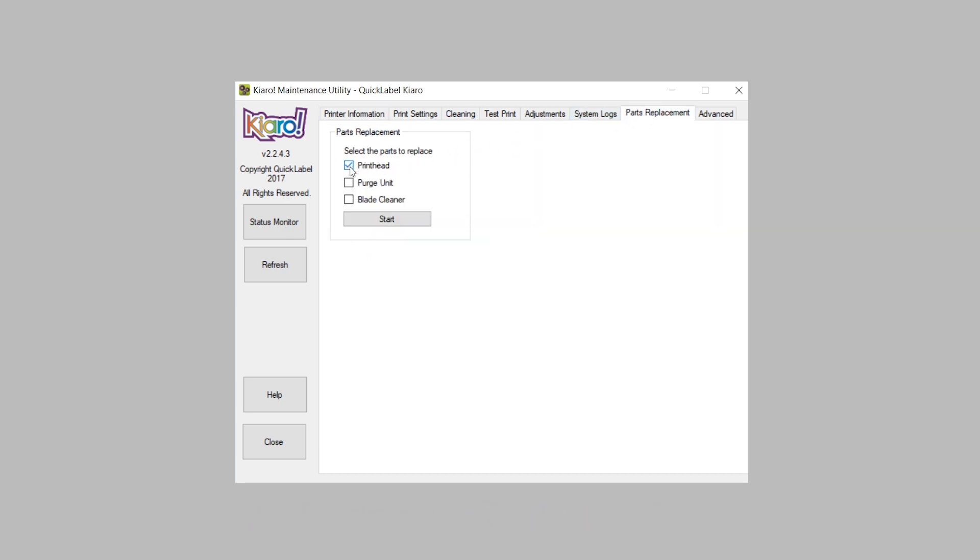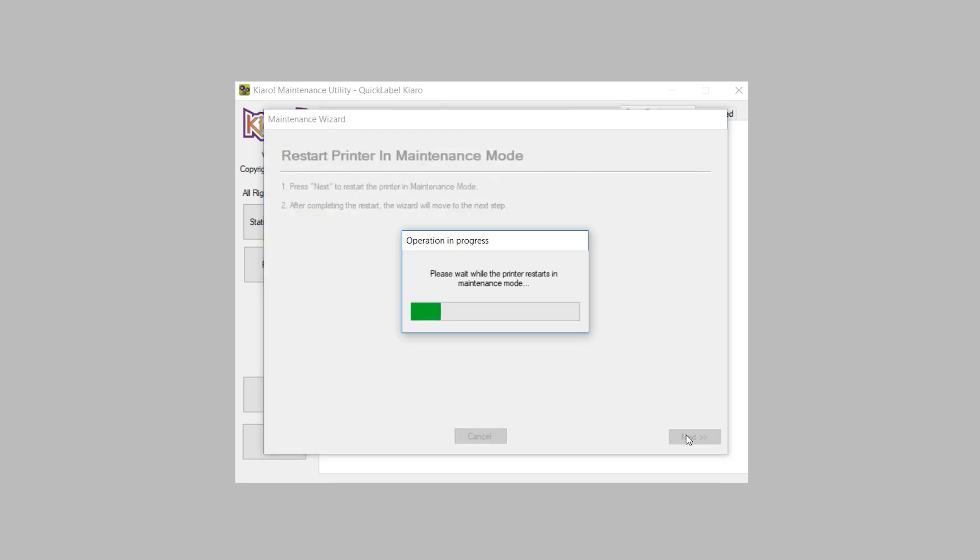Select the Parts Replacement tab, check Print Head Replacement and click Start. Press Next to initiate. The printer will begin draining ink. This will take several minutes.